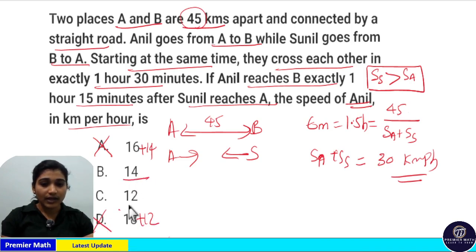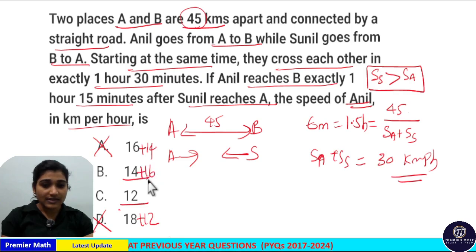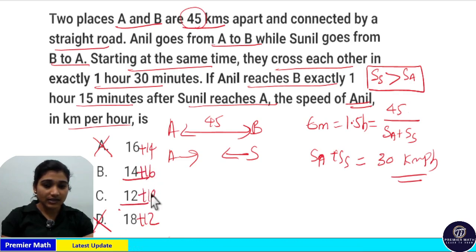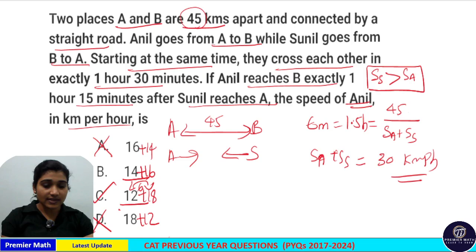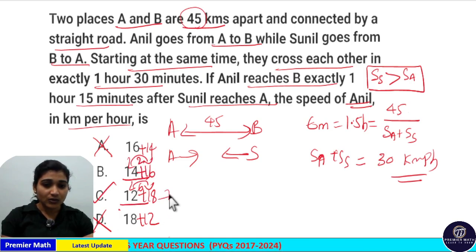Either option B or option C can be the answer. 14 plus 16 is possible and 12 plus 18 is possible, as both sum to 30. However, option C is preferred because the difference between 12 and 18 is 6, which is larger compared to the difference between 14 and 16, which is only 2. So we choose the larger difference.